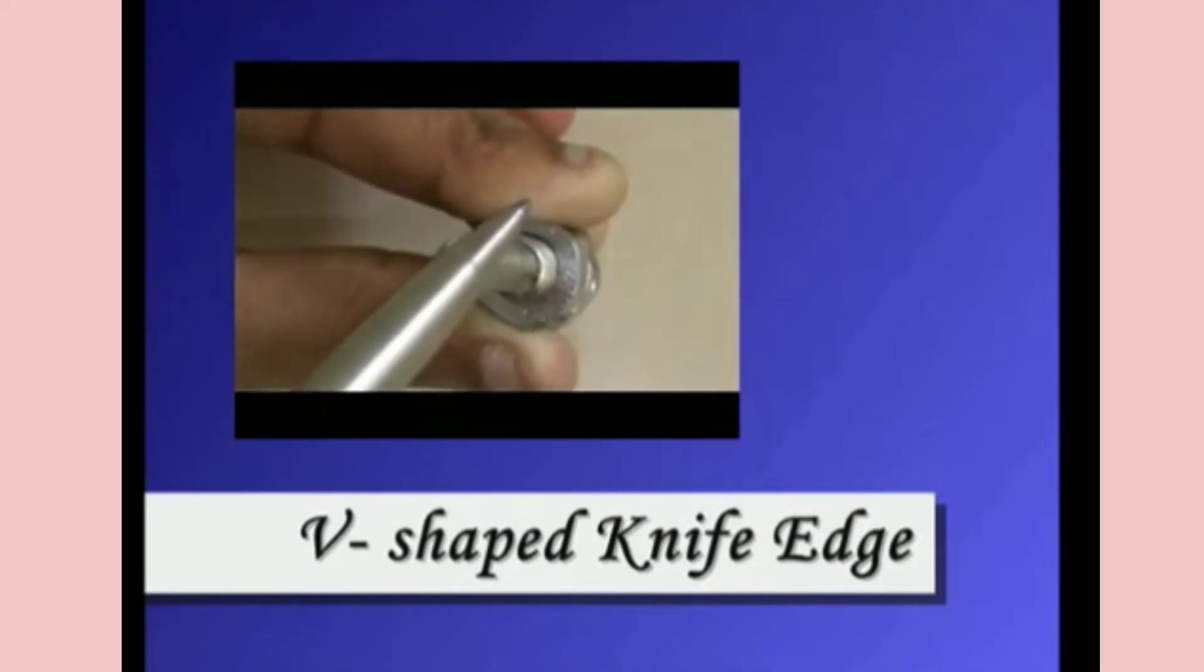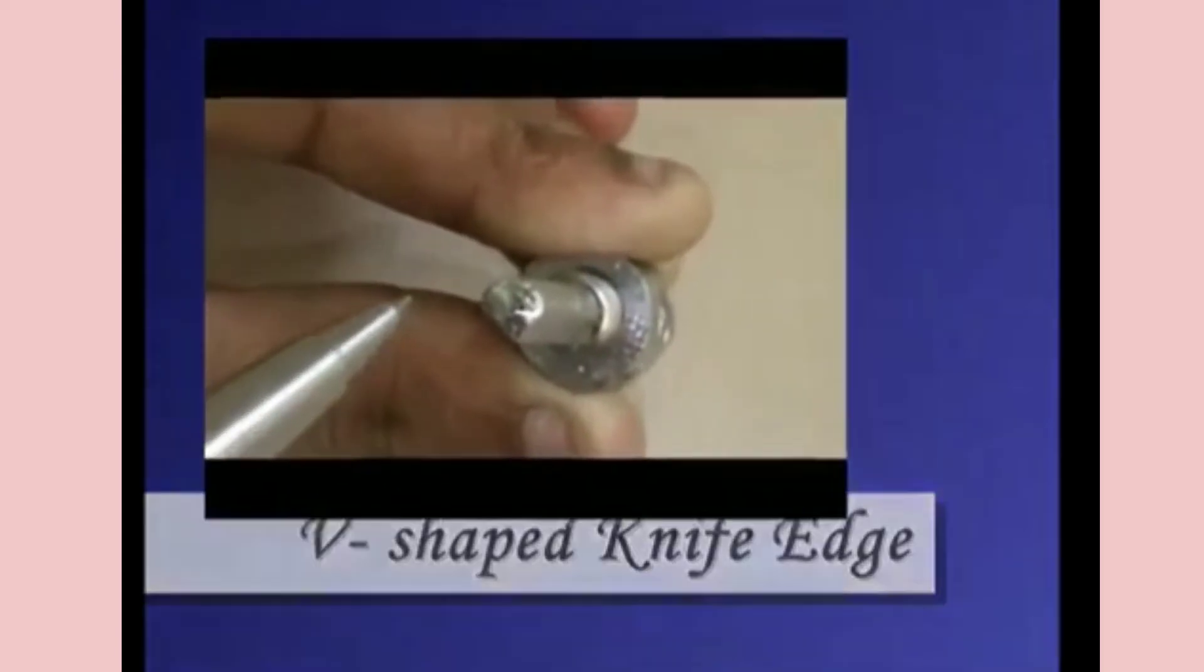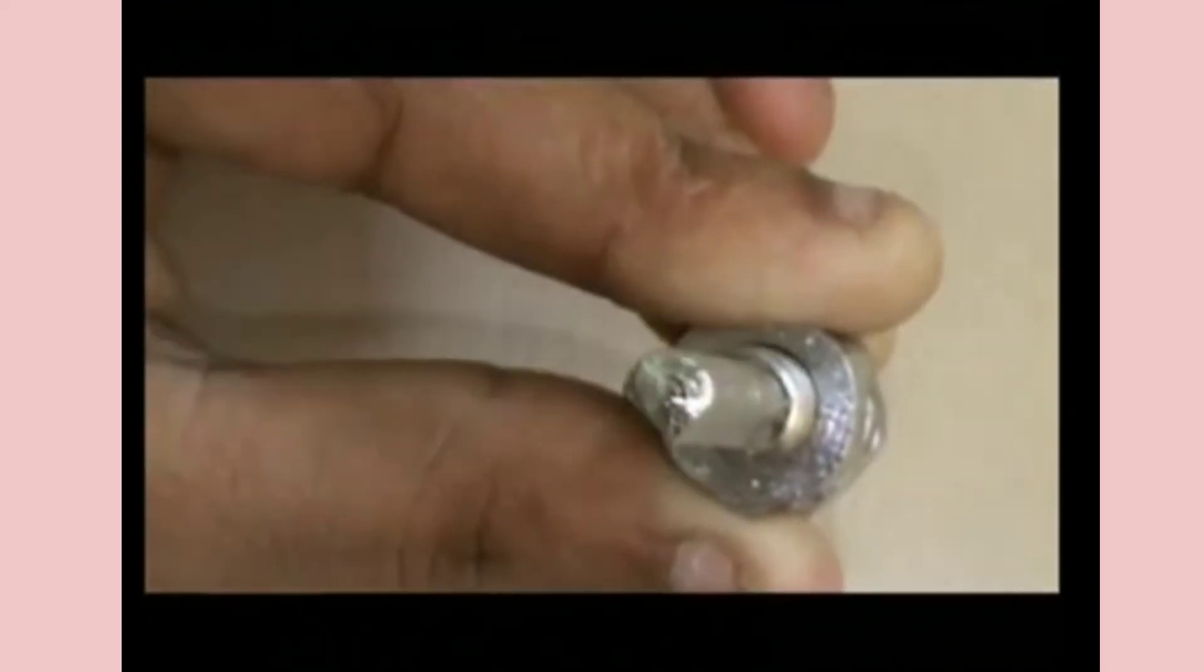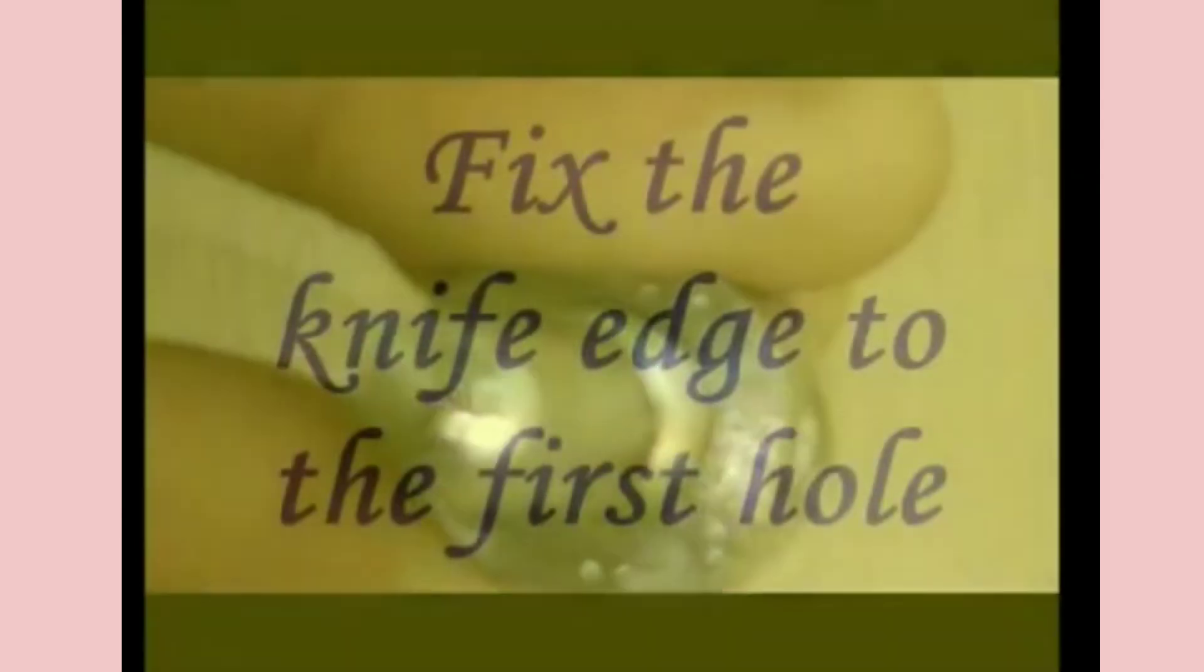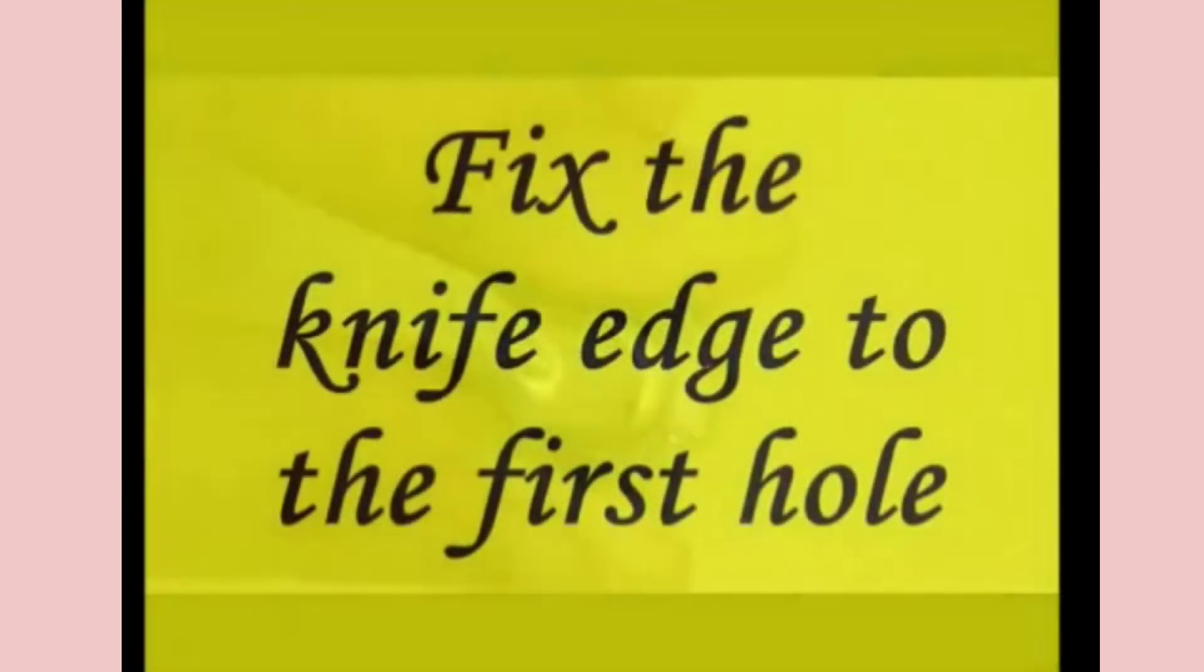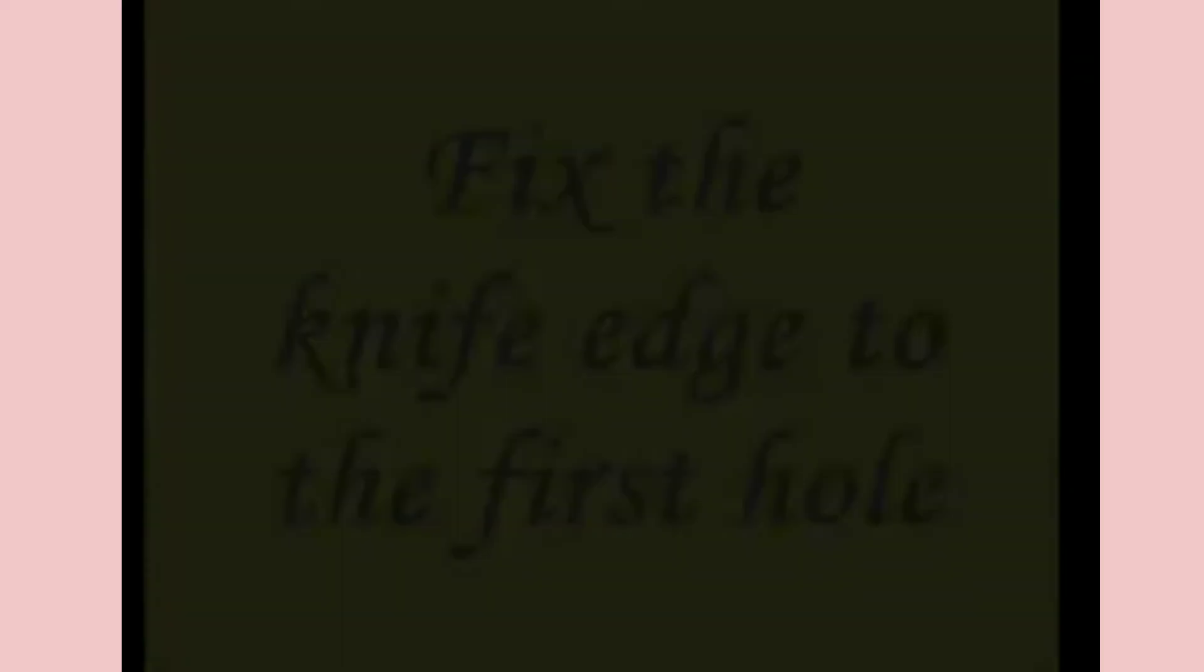This is called V-shaped knife edge. This knife edge has to be suspended on the G clamp. Fix the knife edge to the first hole of the compound pendulum by using the bolts on both sides.